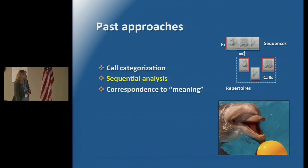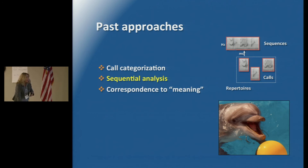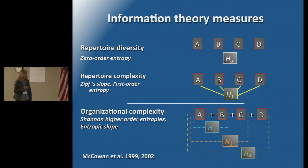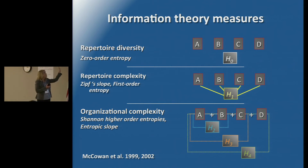Now let's move on to sequential analysis. We have a call categorization system that, at the time, was very useful and may continue to be so with new techniques. Let's talk about how we applied those signal categories to looking at information theory measures. As Lawrence has already pointed out, zero-order entropy measures the diversity of the repertoire.